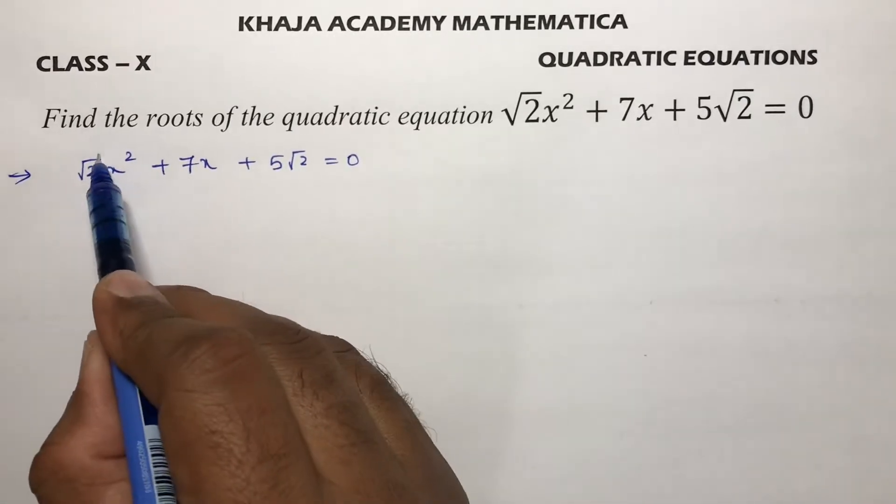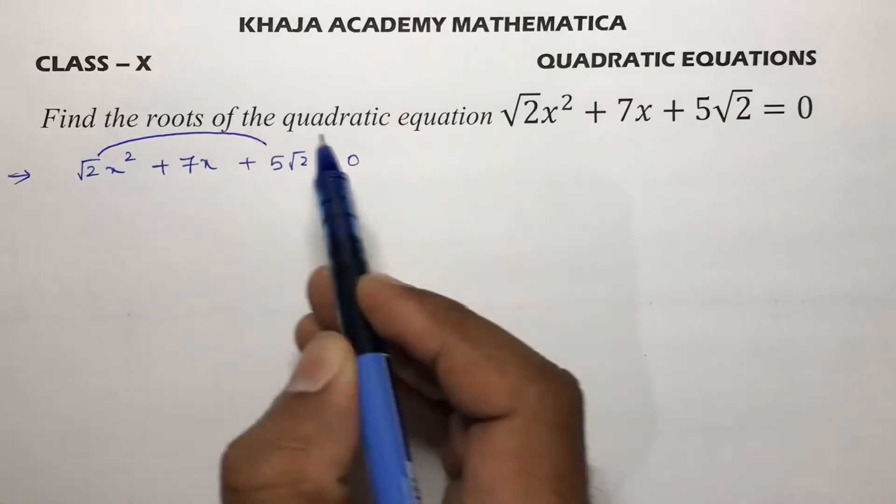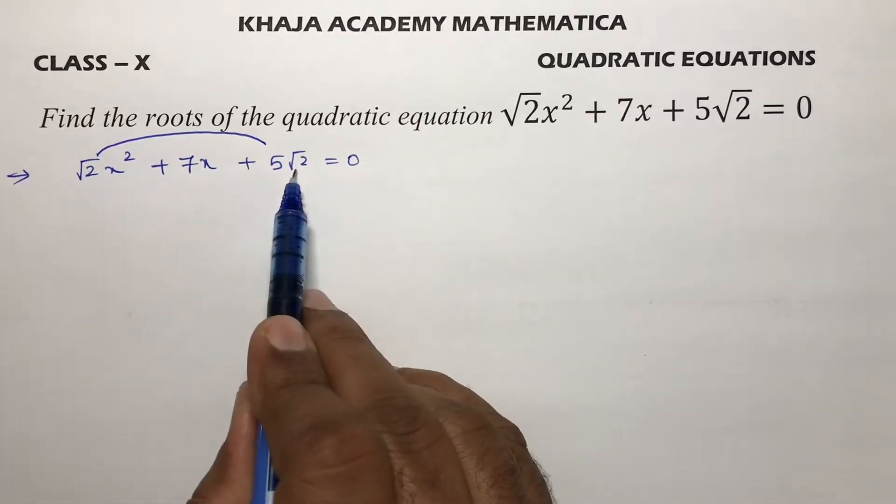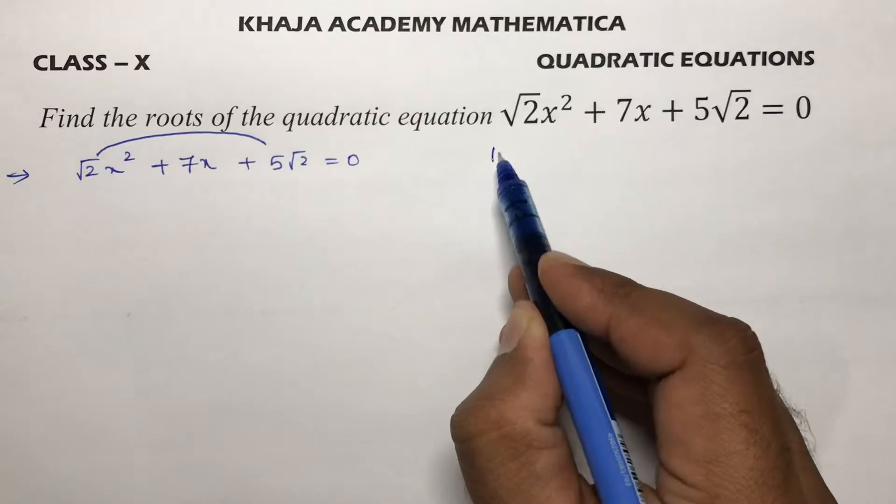Splitting the middle term factorization: √2 into 5√2, √2 into √2 is 2, 2 into 5 is 10.